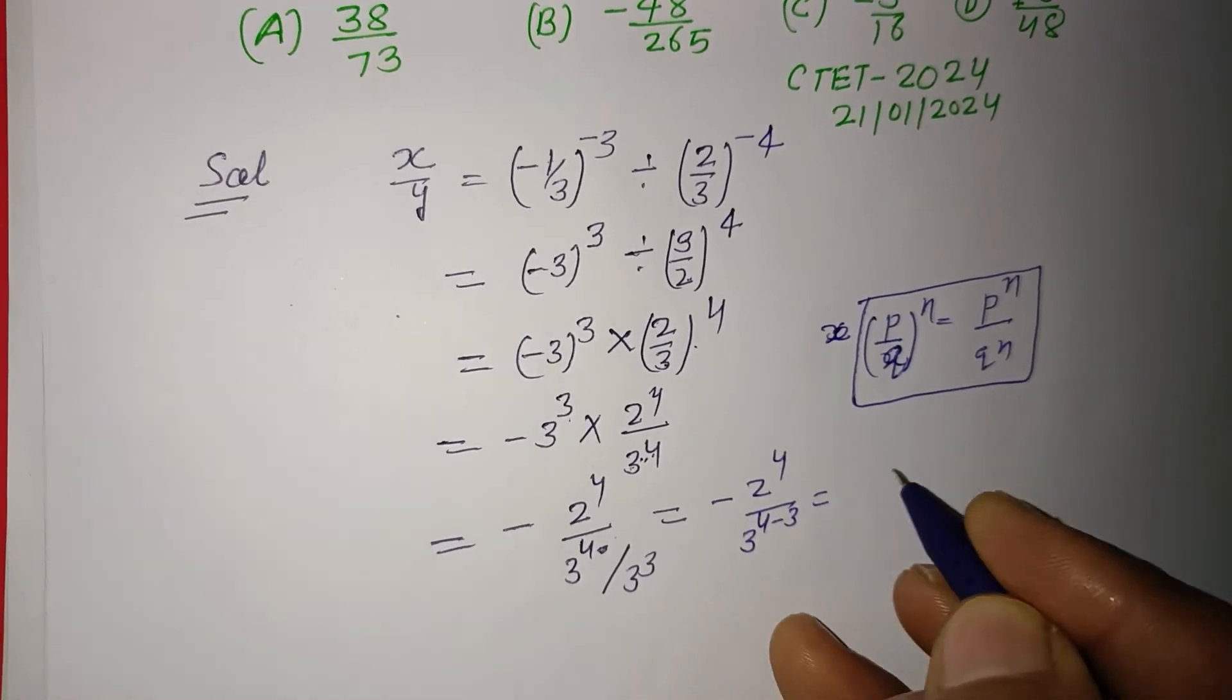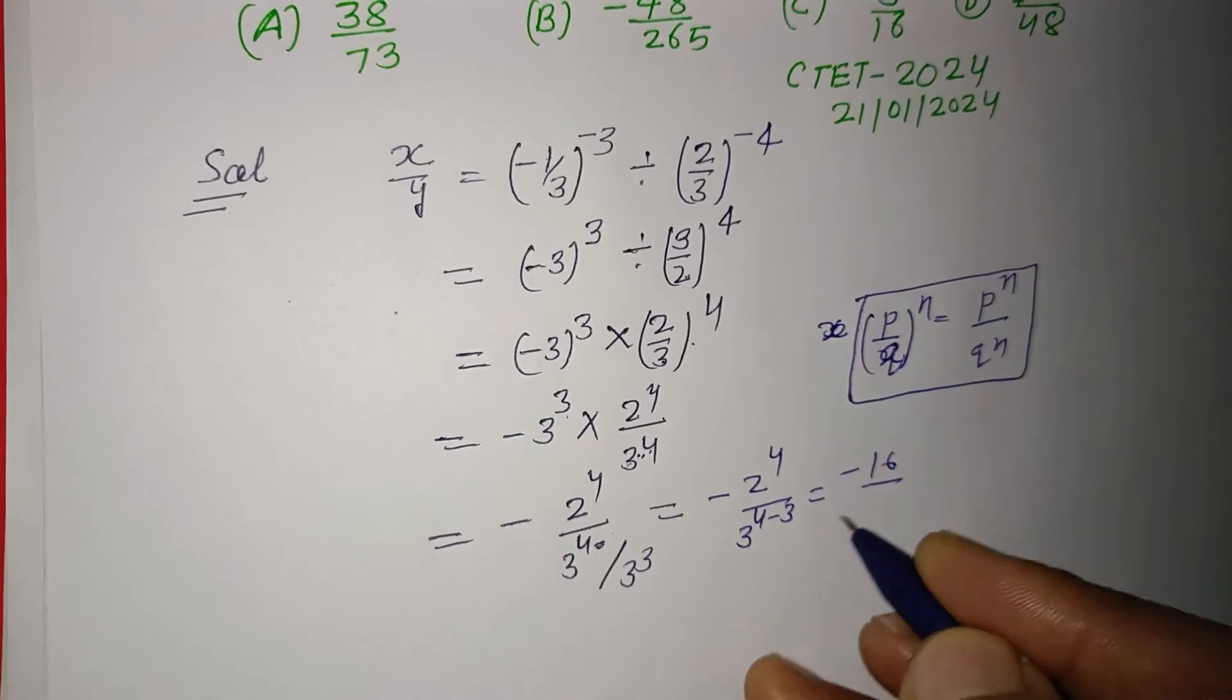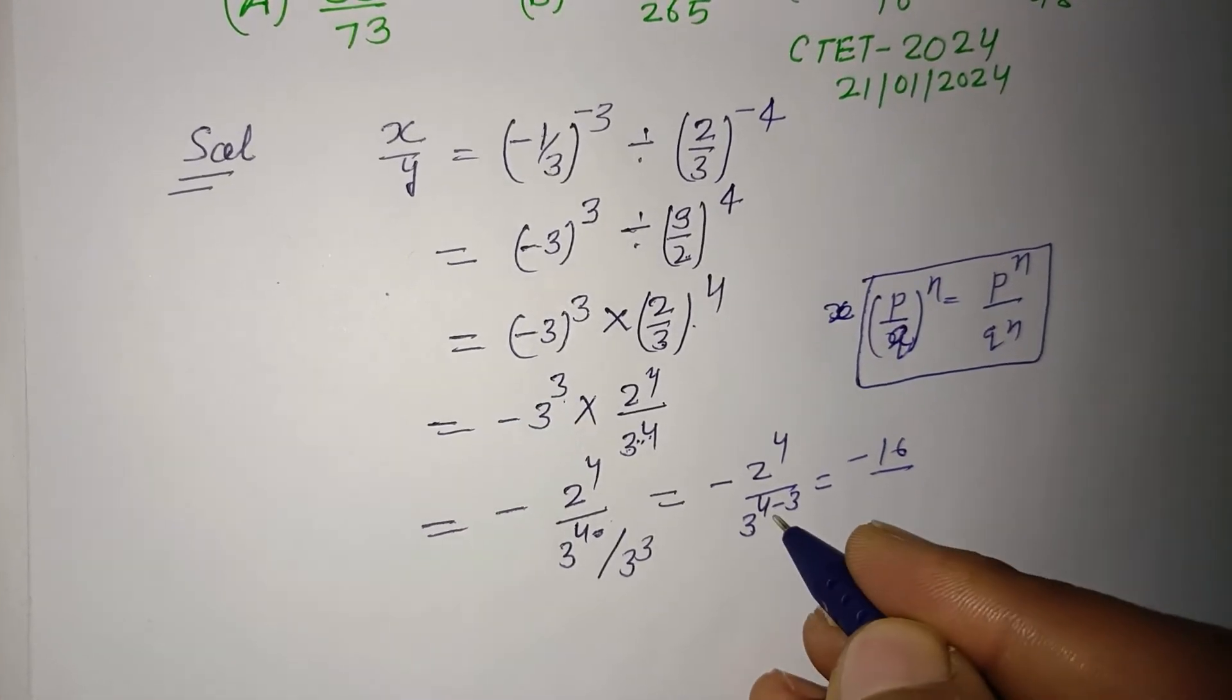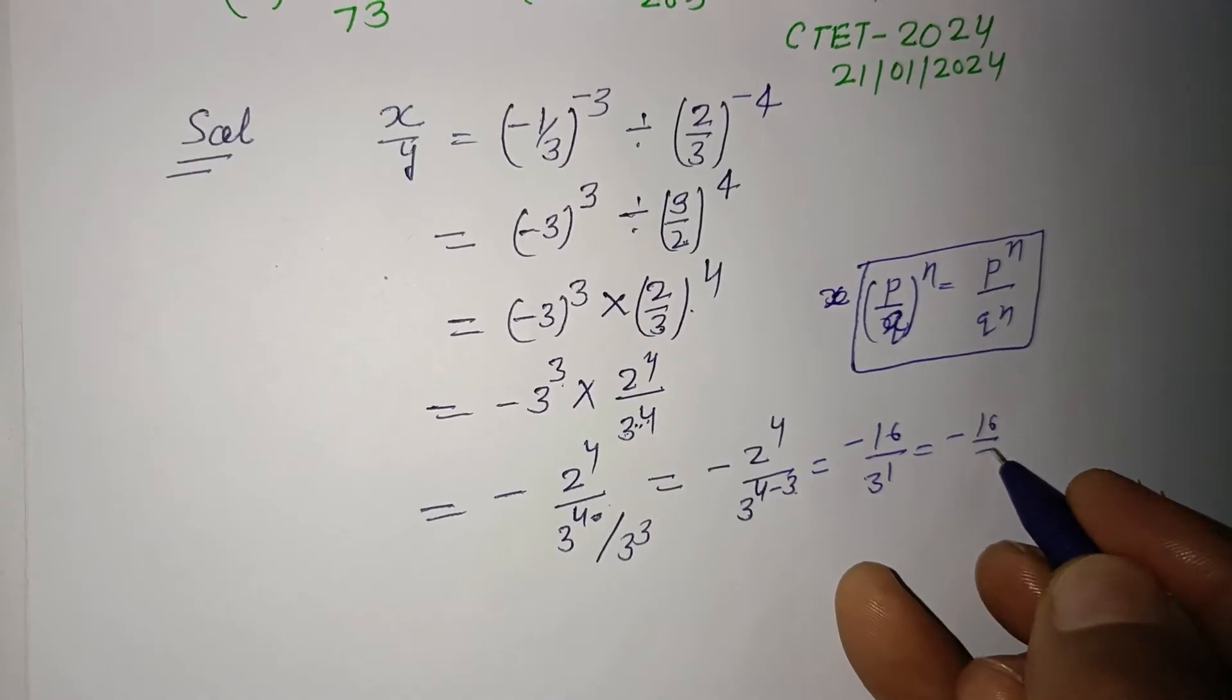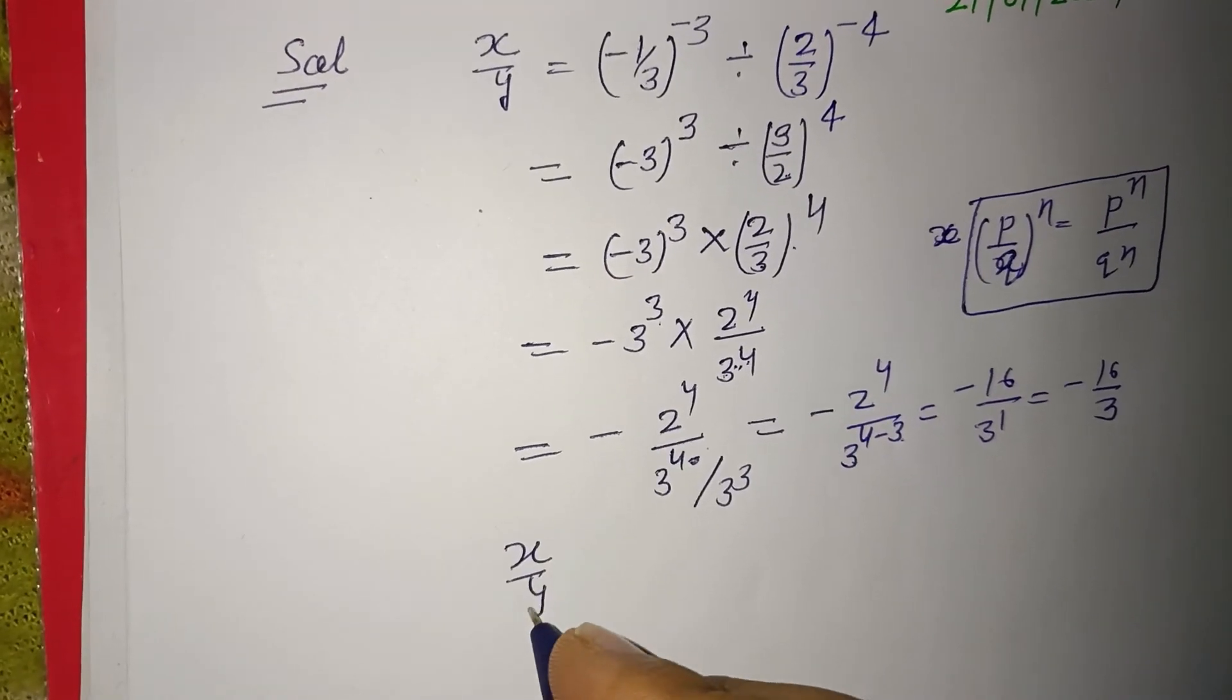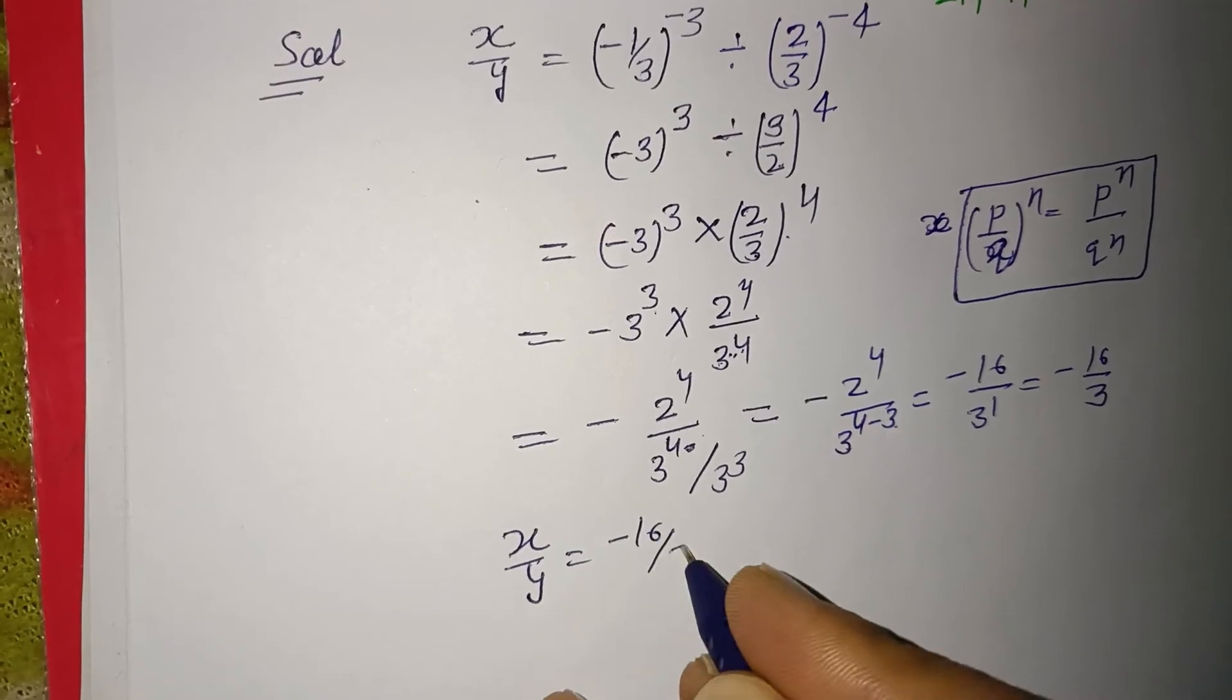And this is -16 over 3^(4-3), this is 3^1. Therefore 16/3, so x/y is -16/3.